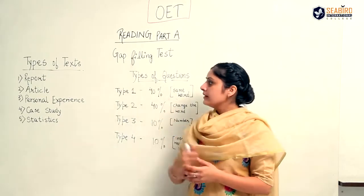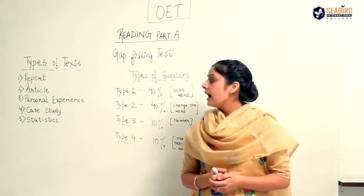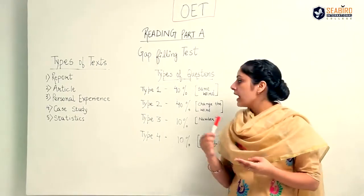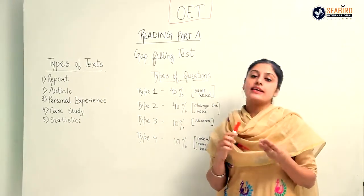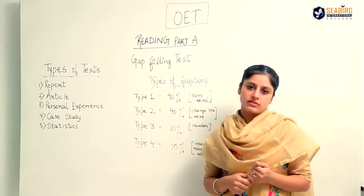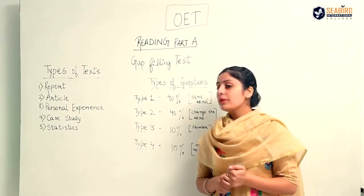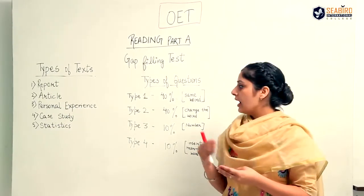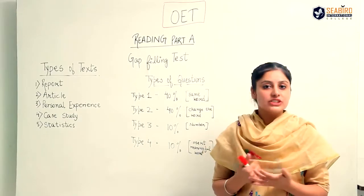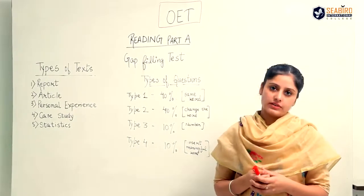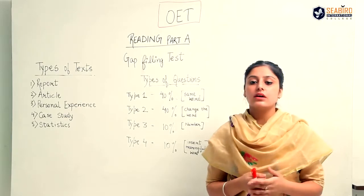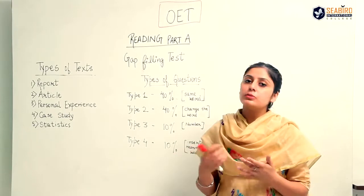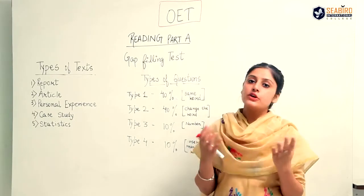In reading part A, you'll be getting four different texts. The types of texts can be a report, an article, a personal experience, or a case study. A report contains background, objectives, and results. An article can be any article from a journal or a website. Personal experience contains somebody's personal experience or personal case study. A case study is similar to personal experience but it is a case study on any topic.